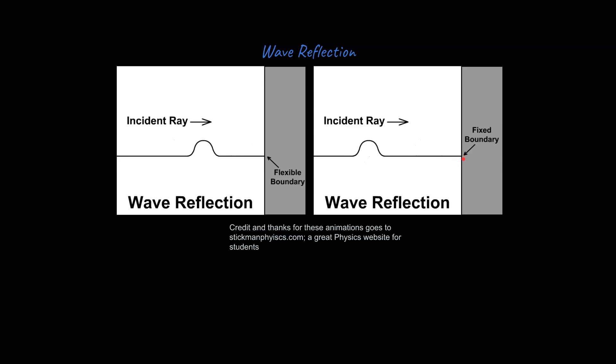Whereas if the boundary is fixed, like if the rope is tied securely to the ring stand itself, the reflected ray is actually going to be inverted, is what we say. So it's going to be like flipped upside down. All right, and that does it for our introduction to superposition, how to handle problems like that, and wave reflections.